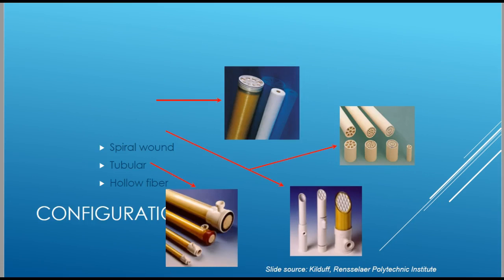Here are typical configurations of membranes. They originally were flat sheets and were configured as spiral wound membranes to compact the area of flat membranes. There are tubular membranes that are round and arranged like conventional heat exchangers, and there are hollow fiber type membranes that take advantage of a very high surface area.